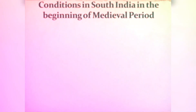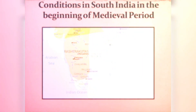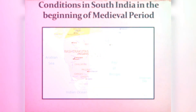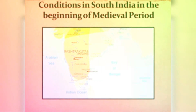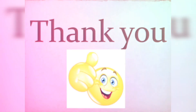Now let us discuss what was happening in South India in 647 CE. In the beginning of the medieval period, South India remained unaffected by the events happening in North India. Two kingdoms, named the Cholas and the Rashtrakutas, flourished in South India. They were very prosperous kingdoms. That's all for now.